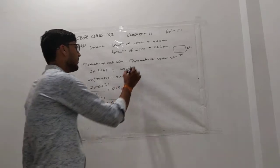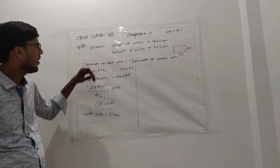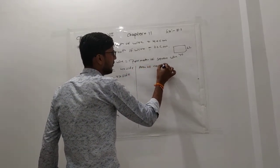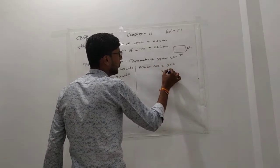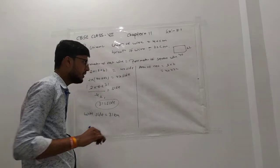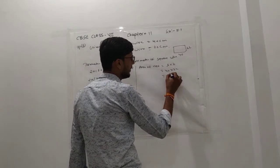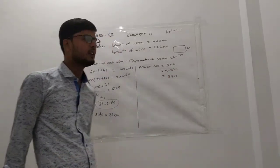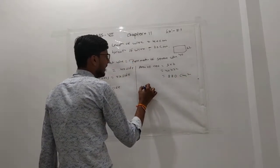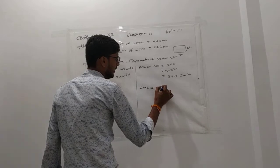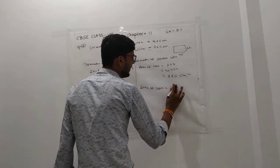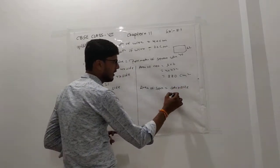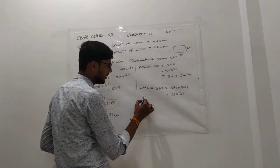Also find which area is greater. So we find the area of rectangle and the area of square. Area of rectangle is length × breadth = 40 × 22. Area of square is side × side, so 31 × 31.